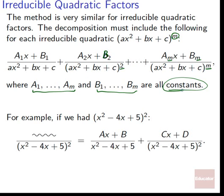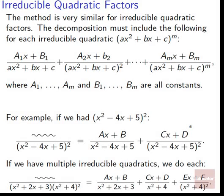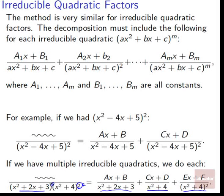For example, if we had (x²−4x+5)² on the bottom, we'd get (Ax+B) over (x²−4x+5) + (Cx+D) over (x²−4x+5)². A, B, C, D are all just constants. If we have multiple irreducible quadratics, such as (x²+2x+3) and (x²+4)², we write (Ax+B) over (x²+2x+3) + (Cx+D) over (x²+4) + (Ex+F) over (x²+4)².